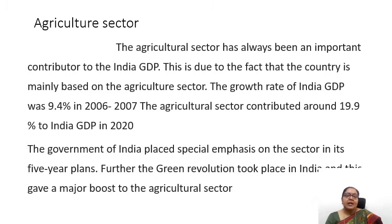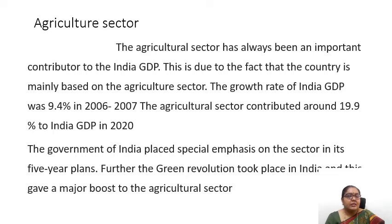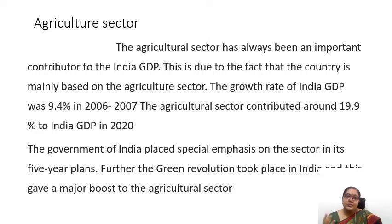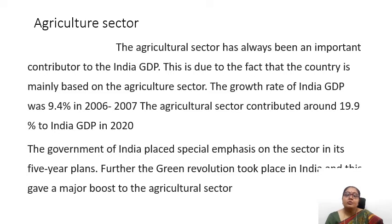Later on, agriculture still was predominant in India and continued to be the main contributor to the Indian economy. Recently, when we check our statistics, our economic survey shows that the agricultural sector in 2020-21 has contributed to the GDP by around 19.9%, roughly around 20% of GDP has come from agriculture.